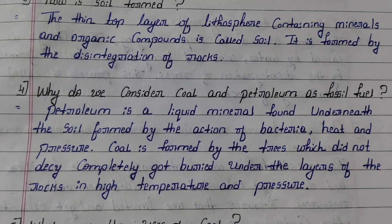Fourth question: Why do we consider coal and petroleum as fossil fuels? Answer: Petroleum is a liquid mineral formed underneath the soil by the action of bacteria, heat, and pressure. Coal is formed from trees which were buried under the layers of rocks under high temperature and pressure.